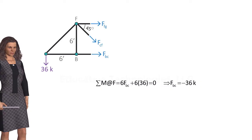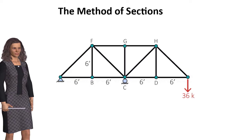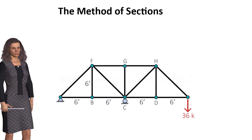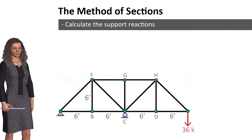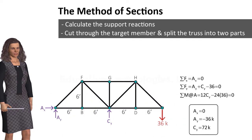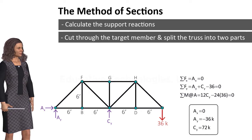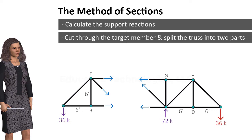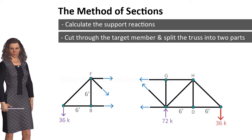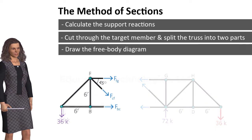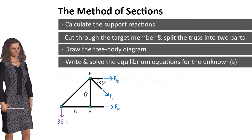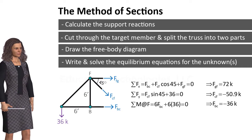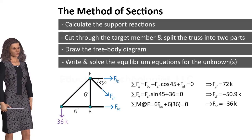Let's summarize what we've learned. The method of sections is suitable for calculating a few member forces without needing to analyze the entire truss. Four main steps are involved: first, calculate the support reactions for the truss; second, cut the truss through the target member and a few other members to divide the structure into two separate parts, exposing one internal force per cut member; third, draw the free body diagram for one of the parts showing support reactions, exposed member forces, and relevant distances and angles; fourth, write and solve the equilibrium equations to determine the unknown forces.